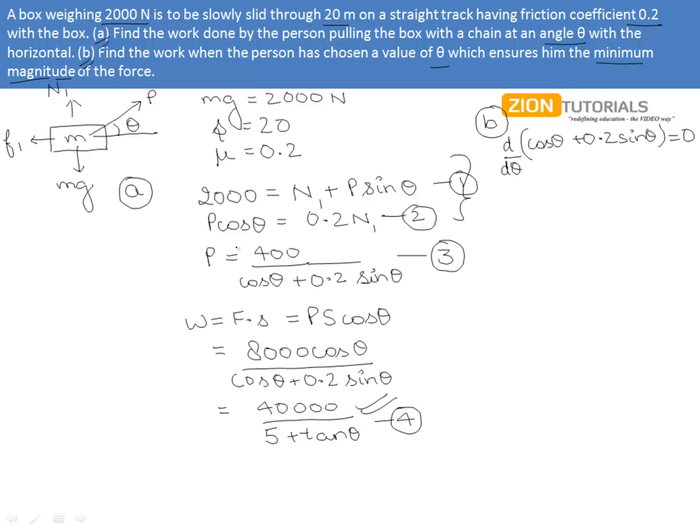Why we have done this is we need to find the minimum force, that is the magnitude. So it will be there when the denominator will be the maximum. So we are actually maximizing the denominator, which can be done by finding out the value of θ by differentiating this expression with respect to θ and getting a value of θ by equating it to 0.